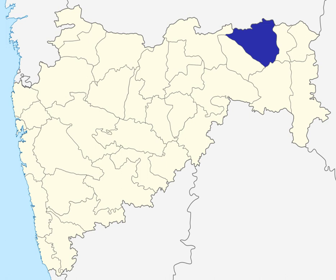Nagpur district has 12 Vidhan Sabha constituencies: Nagpur South-West, Nagpur South, Nagpur East, Nagpur Central, Nagpur West, Nagpur North, Katol, Savner, Hingna, Umred, Kamthi, and Ramtek. The first six constituencies are part of Nagpur Lok Sabha constituency and the rest are part of Ramtek Lok Sabha constituency.